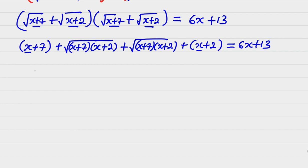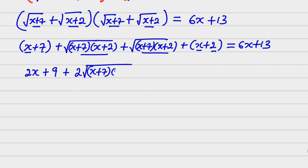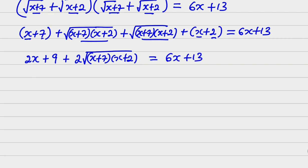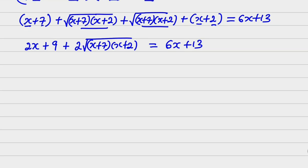Collecting like terms: x plus x gives 2x, and 7 plus 2 gives 9, so 2x plus 9. The two cross-terms combine to give 2 times root of (x plus 7)(x plus 2). So: 2x plus 9 plus 2·root of (x plus 7)(x plus 2) equals 6x plus 13.